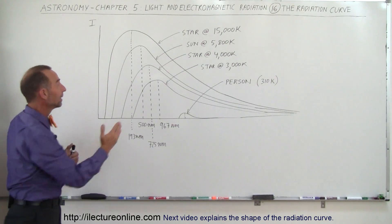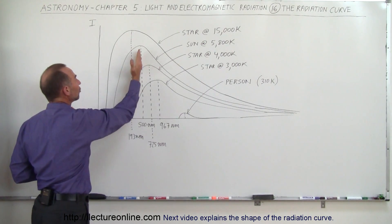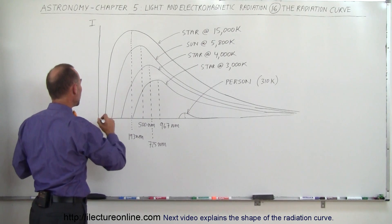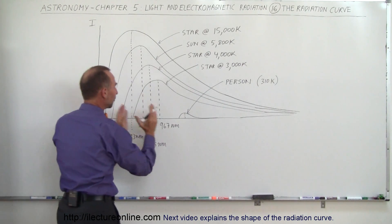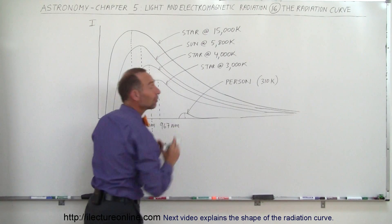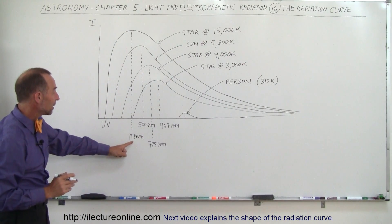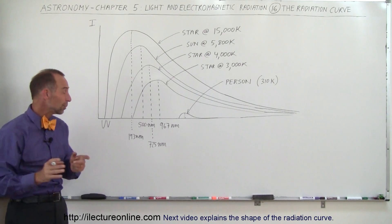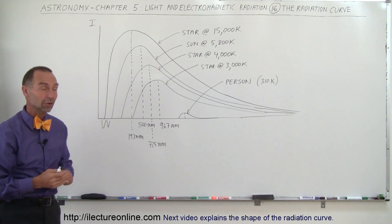Also notice that the highest peak for the radiation is shifted towards the left, towards the UV radiation. You'll have UV in this range, visible light over here, and infrared radiation on that side of the curve. Notice the peak radiation occurs at 193 nanometers, which is well into the UV band.